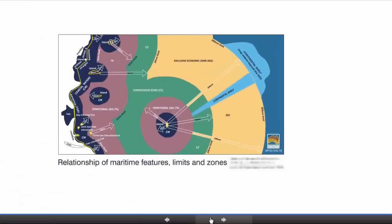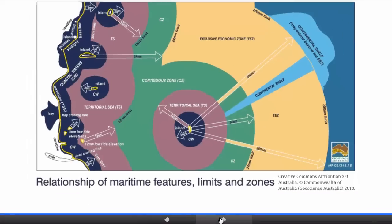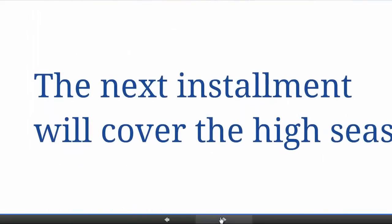That concludes our tour of the zones of coastal state jurisdiction. In previous screencasts we've talked about the territorial sea and internal waters. We've now discussed the contiguous zone and the exclusive economic zone, and in the next part of this series we'll be covering issues to do with the high seas. Thank you for your attention, and I hope you have found this useful and will tune in for the next instalment.